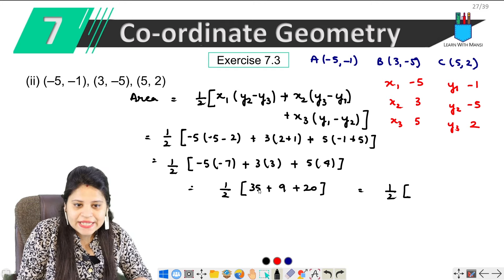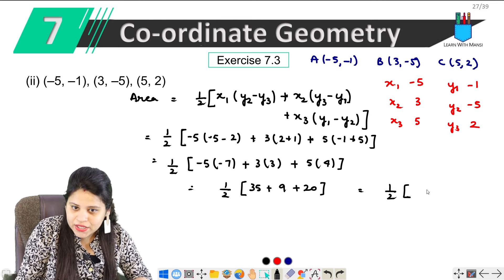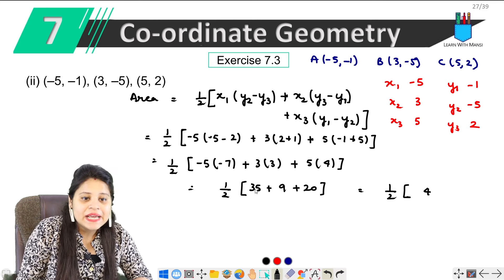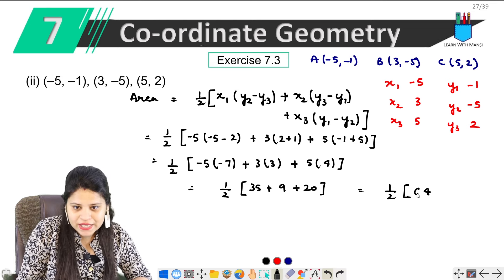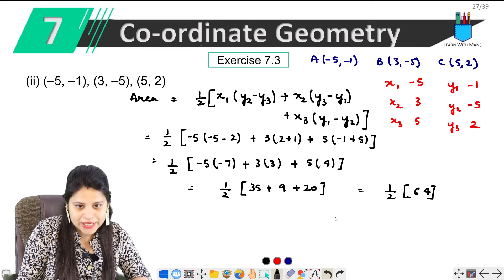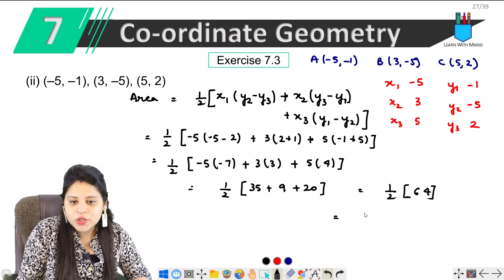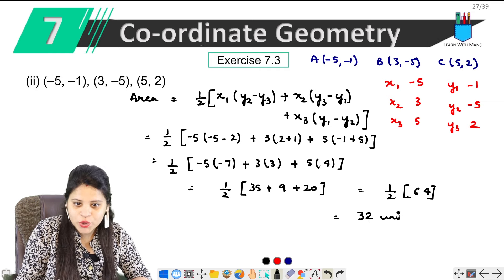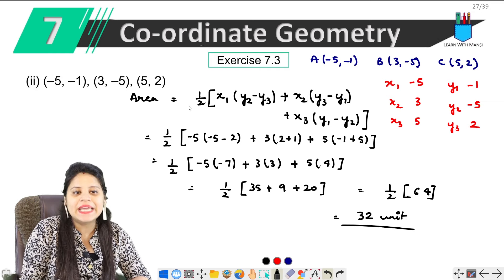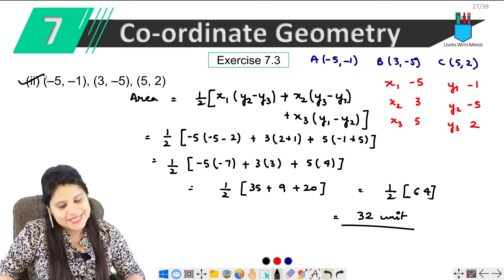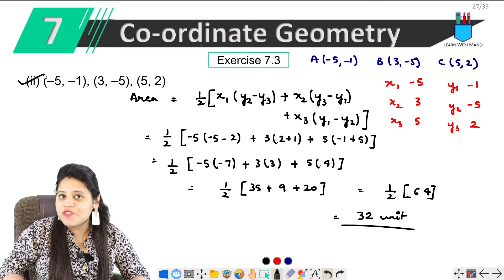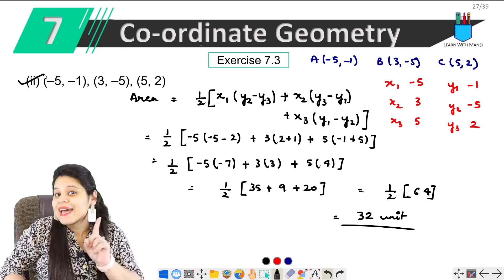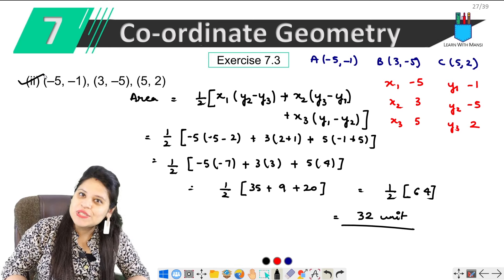This becomes 1 upon 2 times [35 plus 9 plus 20], which equals 1 upon 2 times 64. We can simplify this to 32 square units as the area of triangle whose vertices are these. So this was our first question of exercise 7.3.